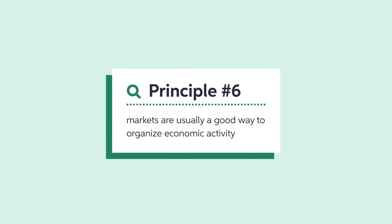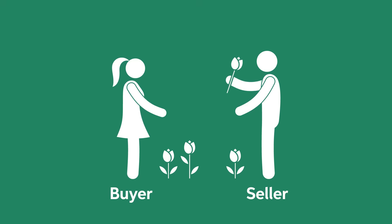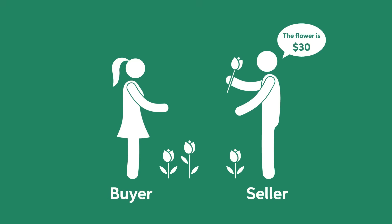One of the ten principles of economics is that markets are usually a good way to organize economic activity. A free market always reaches an equilibrium when scarce resources are allocated among competing users. While we know the final market outcome, it is still early to say whether the market outcomes are good or bad. In market economies, prices adjust to balance the supply and demand, which allows the market to reach equilibrium.